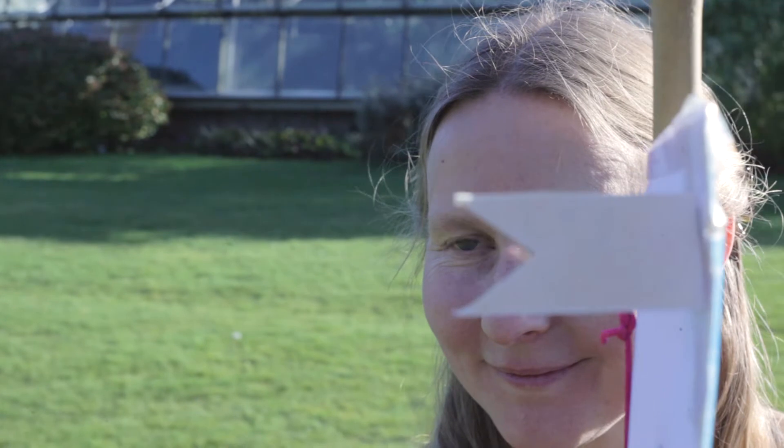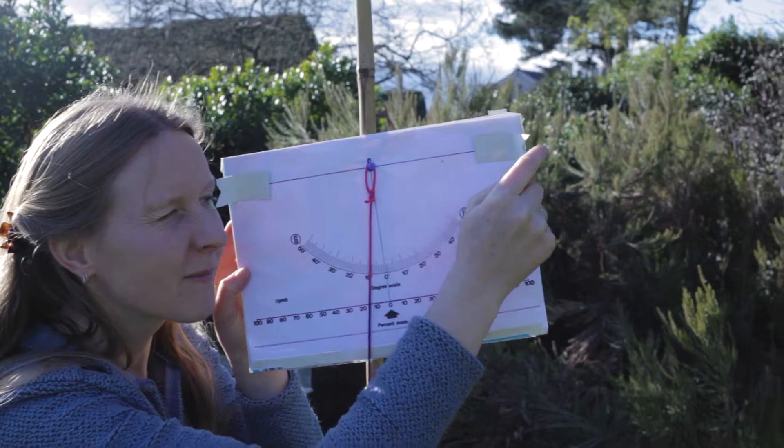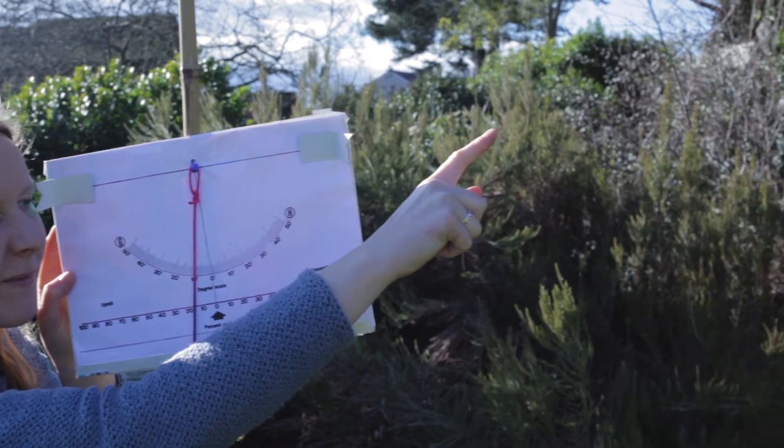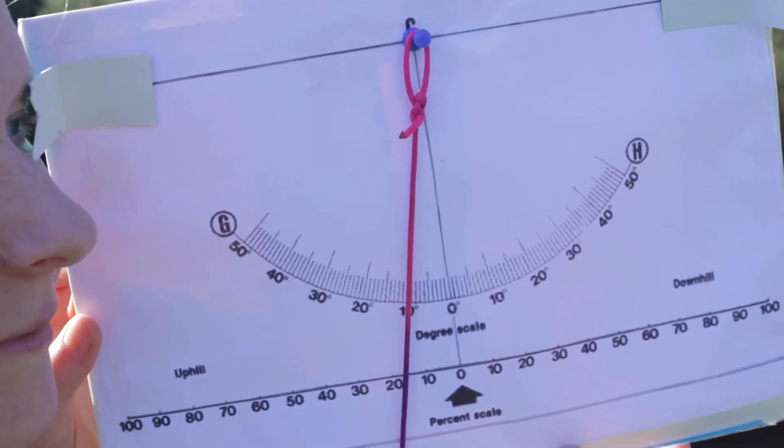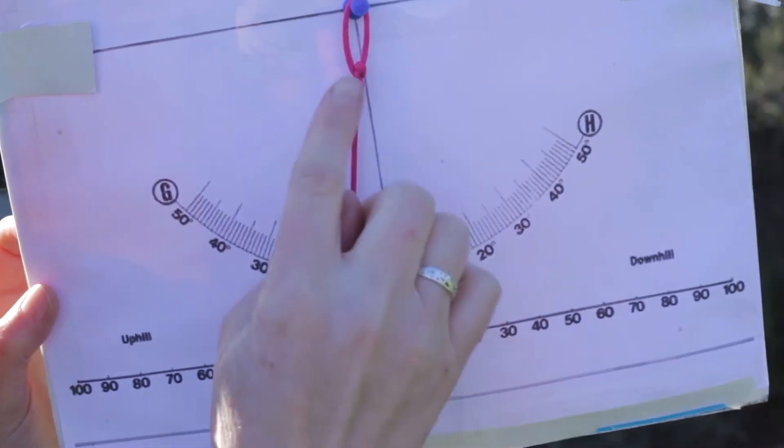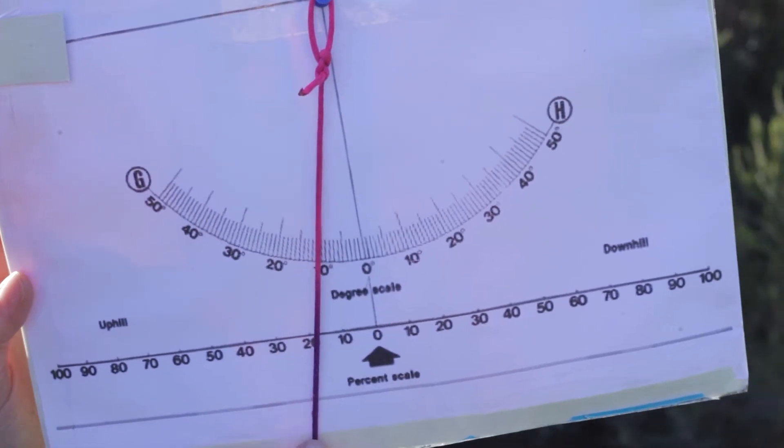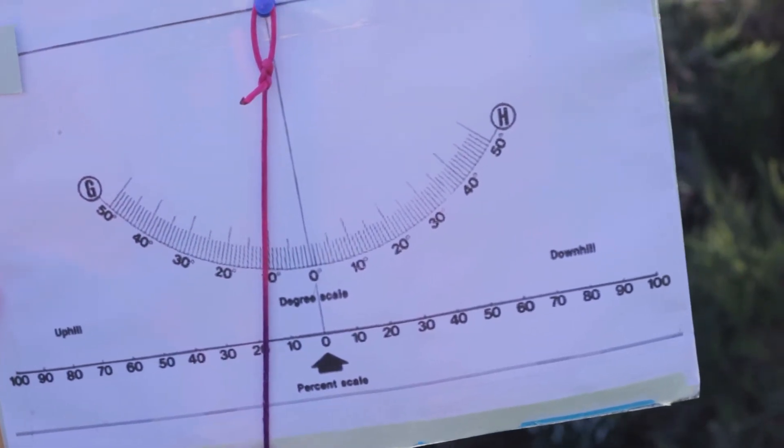Then line up our eye level between the two notches so that we're looking at the top of the mark on the far cane. Then simply read off along this piece of string. In this case, we have a slope angle of 10 degrees or approximately 18%.